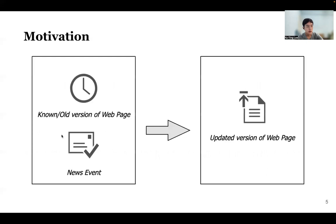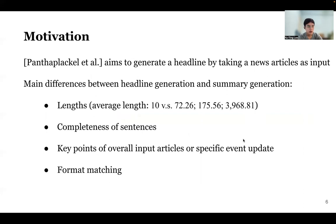This graph shows the core construction of our data. We have a previous version of the web page, the news event happening at time i, and an updated version of the web page at time i plus one. Compared to updated headline generation, longer input and longer output put more pressure on the language model because the model struggles to understand the core idea across multiple paragraphs and full articles. It is also hard for a model to construct the core idea to update the full content generation.